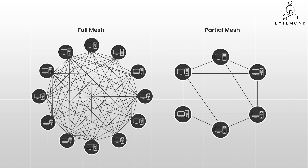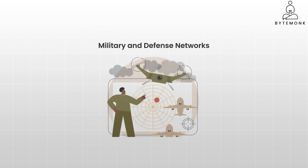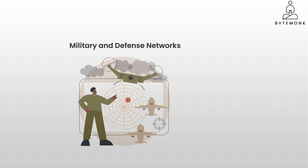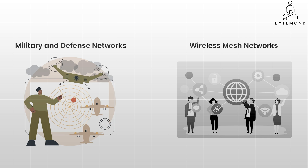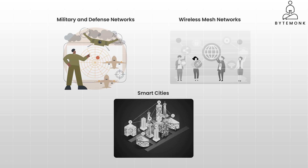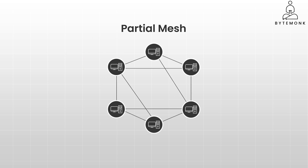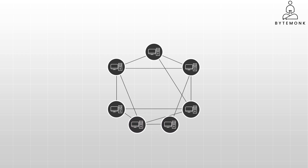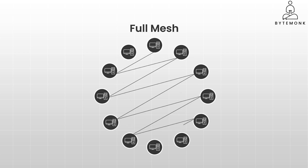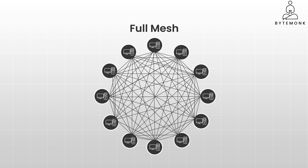Mesh topology is well suited for critical applications where downtime is not an option. Examples include military and defense networks where communication must be maintained even in challenging conditions, wireless mesh networks used to extend Wi-Fi coverage over large areas, and smart cities where mesh networks support interconnected infrastructure such as traffic lights, smart meters, and surveillance systems. Mesh networks have a built-in backup plan for every connection and can fix themselves — if one path breaks, they automatically find a detour, like a GPS rerouting you around traffic. They also scale up easily and tend to be fairly secure. However, building a full mesh network can get expensive and complex to set up.